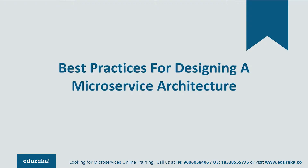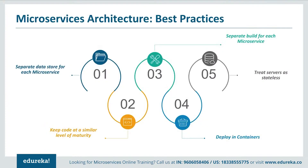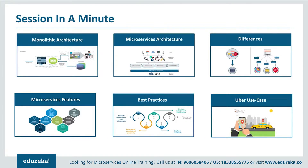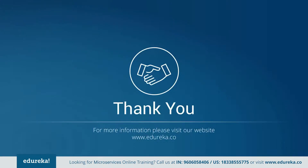Now that you've seen the real-life use case of Uber, let's look at the best practices to design microservices. First, separate the data store for each microservice. Then, keep the code at a similar level of maturity. After this, separately build each microservice according to its respective features and deploy into containers. Lastly, treat the servers as stateless for communication. To summarize: we started with monolithic architecture and its challenges, then went through microservice architecture and the differences between both. We focused on the features of microservices and best practices to design them, then compared Uber's previous framework to the present one. Thank you for watching and have a great day.